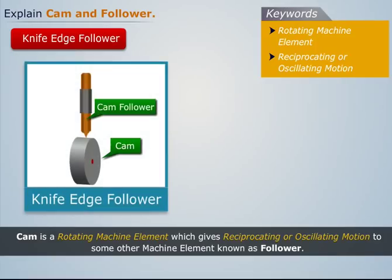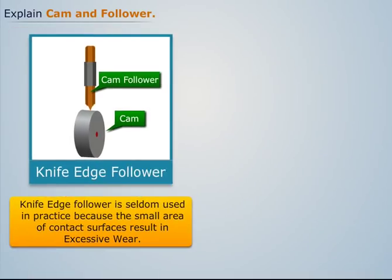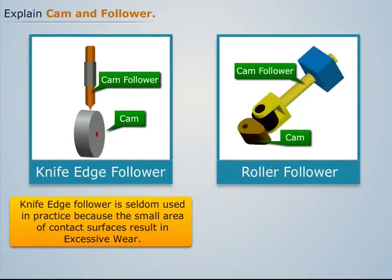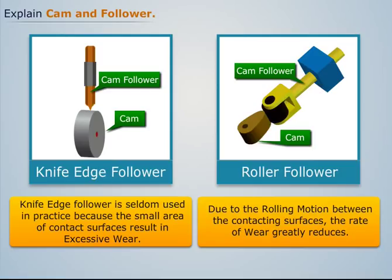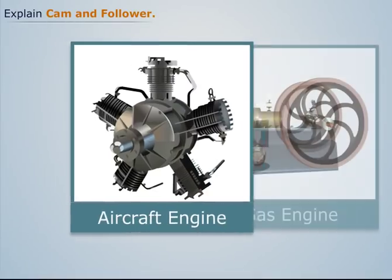When the contact end of the follower has a sharp knife edge, it is called a knife edge follower. Knife edge followers are seldom used in practice because the small area of contact surfaces results in excessive wear. When the contact end of the follower is a roller, it is called a roller follower. Due to the rolling motion between the contacting surfaces, the rate of wear greatly reduces. This type of follower is extensively used in oil and gas engines and aircraft engines.